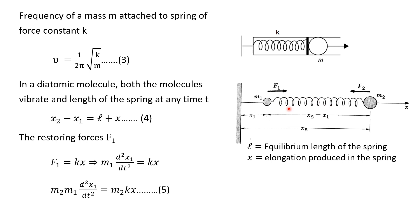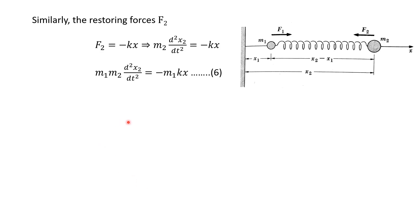In the case of elongation, the restoring force f1 acting on mass m1 is directed toward the right, so we take it positive, and the restoring force f2 acting on mass m2 is directed toward the left, so we take it negative. The restoring force f1 equals k times x, and applying Newton's second law we have m1 d²x1/dt² equal to kx. This is equation number five.